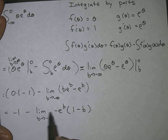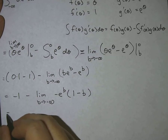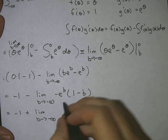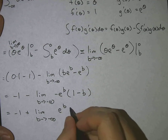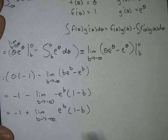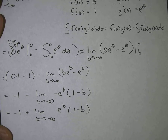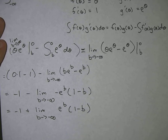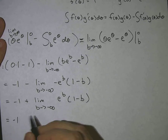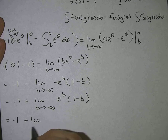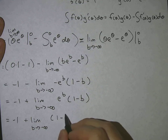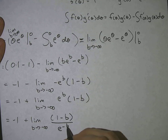The reason I do that is because these negative signs conveniently cancel out, giving me negative one plus the limit as b approaches negative infinity of e to the b times one minus b. If we try to plug in negative infinity, we get zero times negative infinity, which we can't handle in this form. So we rewrite it as one minus b over e to the negative b to put it in a form where L'Hôpital's rule can be used.